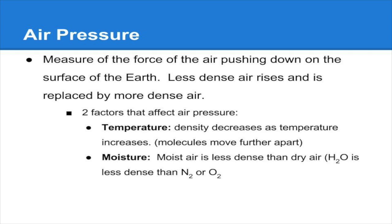Generally speaking, air pressure is how much the air above a given location is pressing down on an area. Two things that can directly affect air pressure are temperature and moisture, because of the effect they have on the density of air. If you have hot, very humid, moist air, that's going to be low pressure air. On the flip side, if you have cool, very dry air, that's going to be the type of air that exerts the most air pressure.